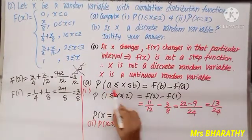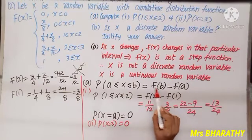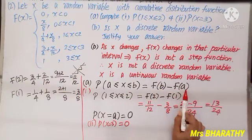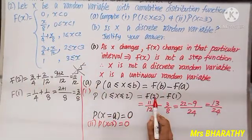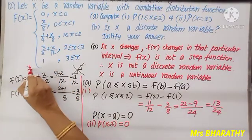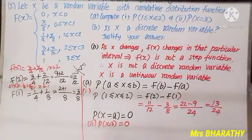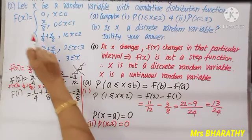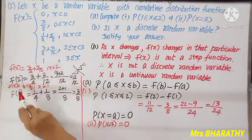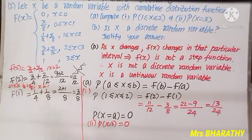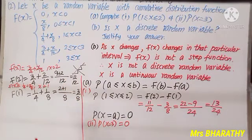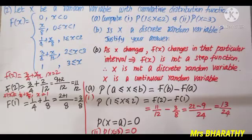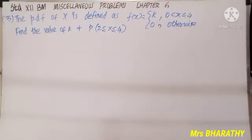To summarise when capital F is given: P(a ≤ X ≤ b) = F(b) − F(a). Check which interval a and b fall into, substitute x, simplify by taking LCM, and get the required answer. Here for x = 2 we use F(x) = 3/4 + x/12, and for x = 1 we use F(x) = 1/4 + x/8.